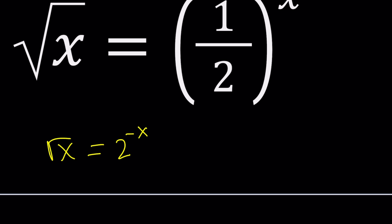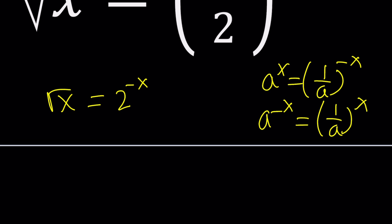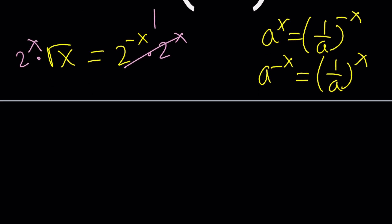In other words if you have a to the power x that is one over a to the power negative x or if you have a to the power negative x that can be written as one over a to the power x. So that's just the reciprocal thing. So now we have a nicer form because we can now multiply both sides by two to the power x. Let's do it. This is going to become one and now we have square root of x times two to the power x equals one. Is this helpful?